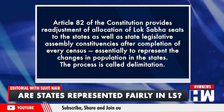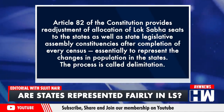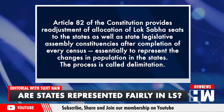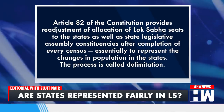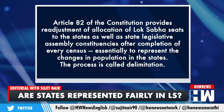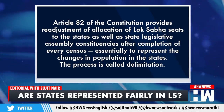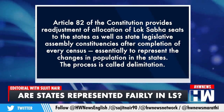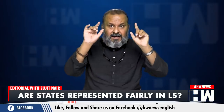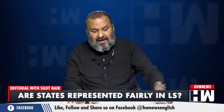Article 82 is linked with Article 81. Article 82 of the Constitution provides readjustment of allocation of Lok Sabha seats to the states as well as Legislative Assembly constituencies after completion of every census. Essentially, to represent the changes in the population in the states, the process is called delimitation. Remember this word — delimitation. This is a very important word because it matters.